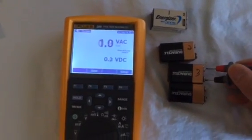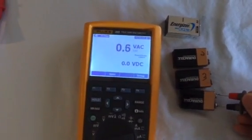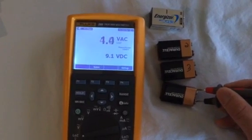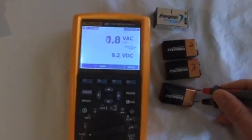Battery number three, 1.7 volts. And battery number four, 9.2 volts.